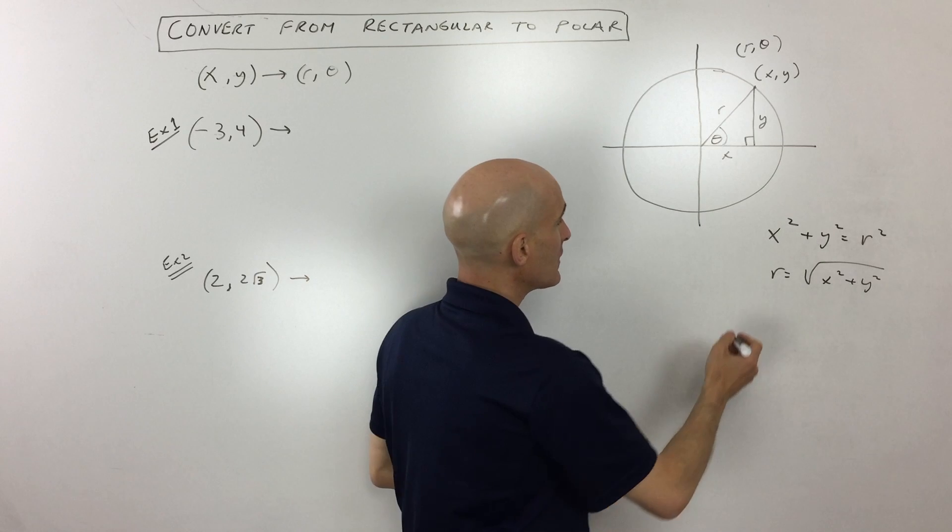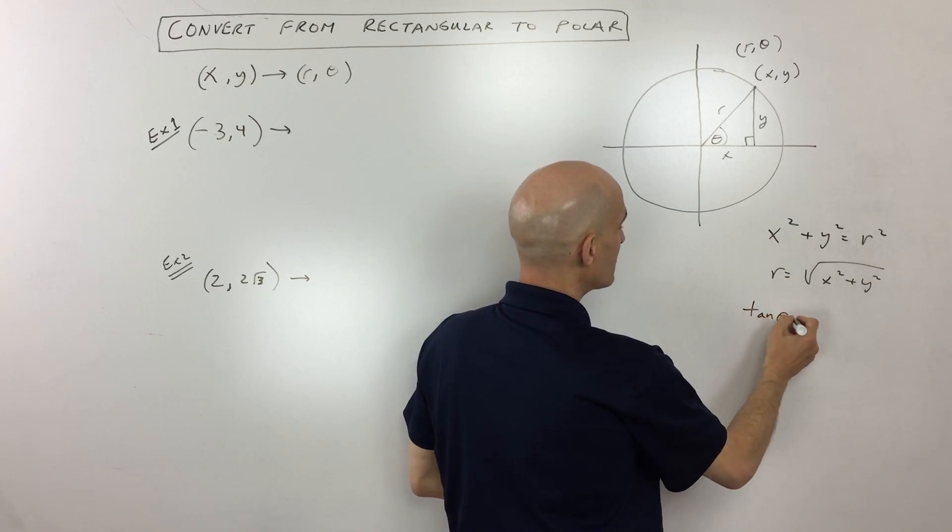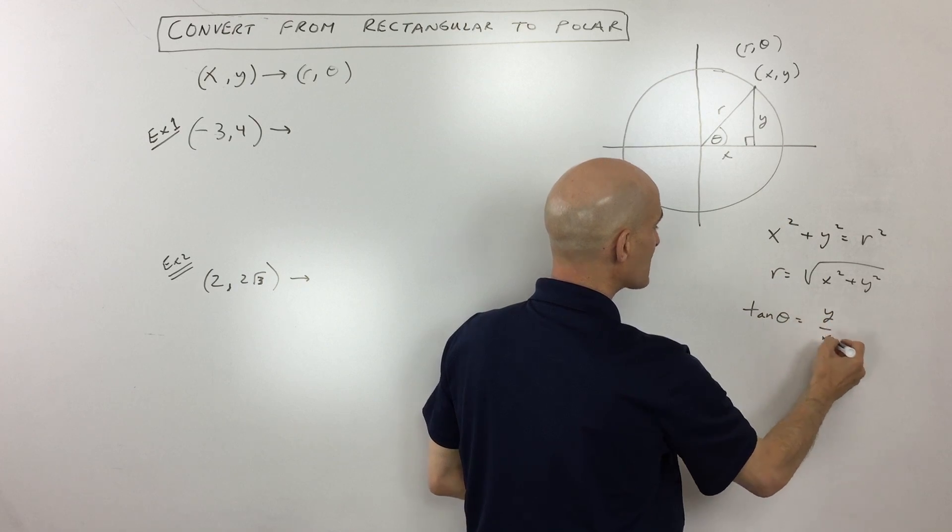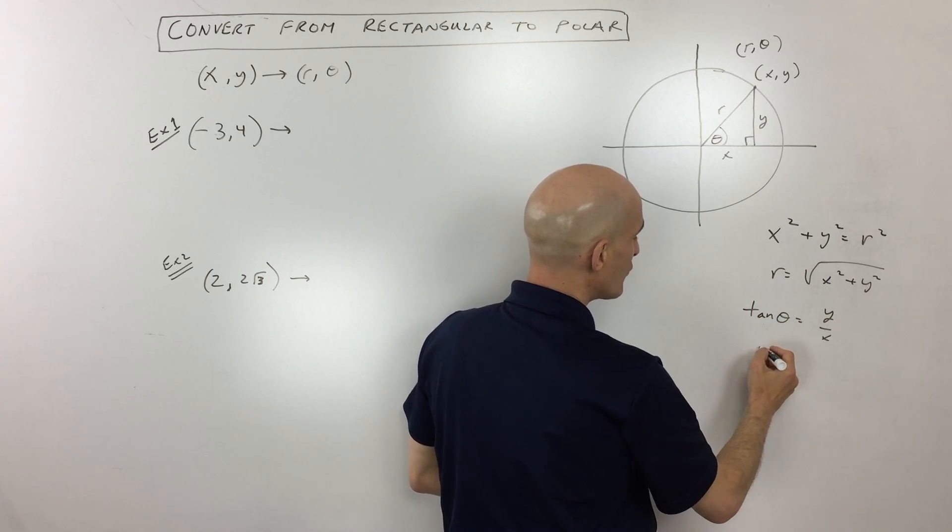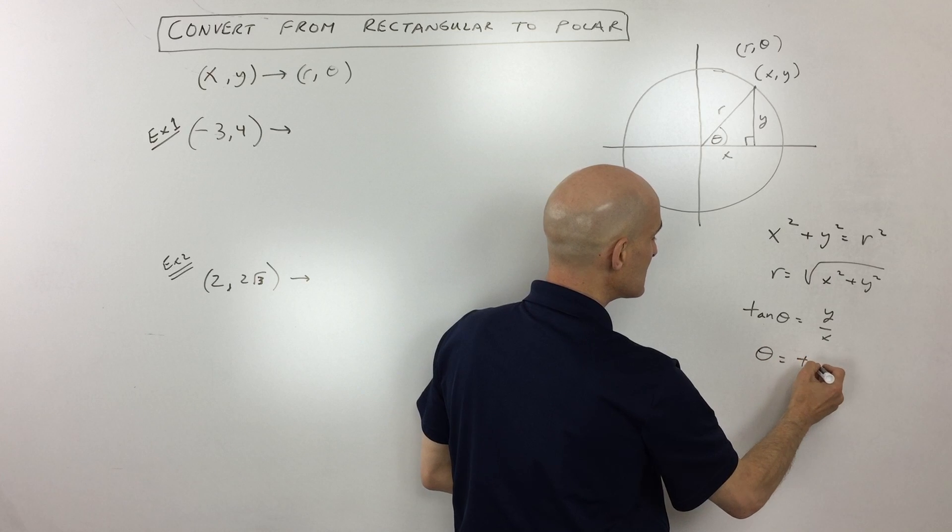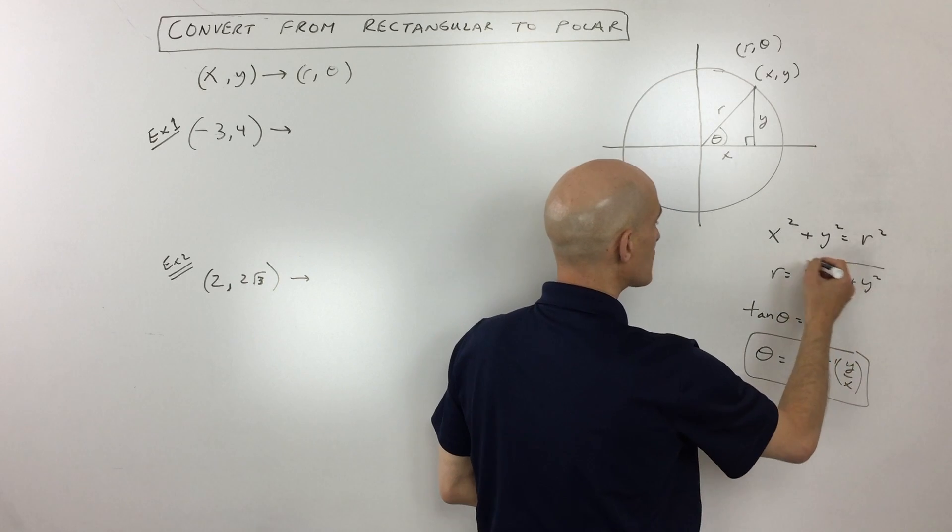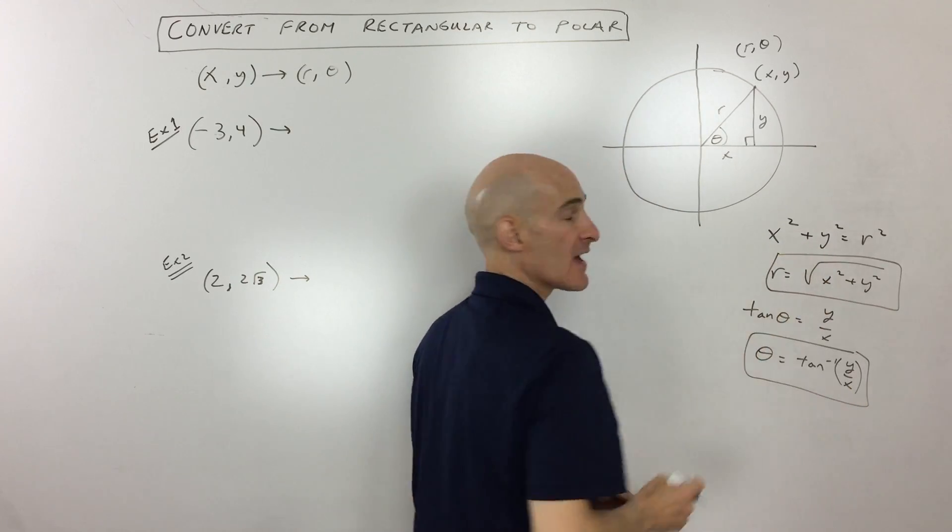Now with this angle here, if you take the tangent of theta, that's equal to opposite over adjacent, that's y over x. But if you take the tangent inverse of both sides, you can see that theta is equal to the tangent inverse of y over x. So these are the two formulas that we're going to be working with in this lesson.